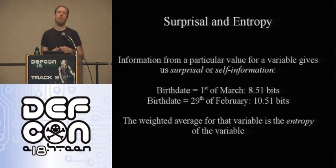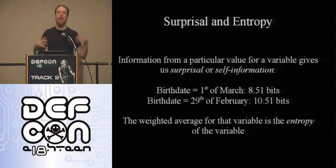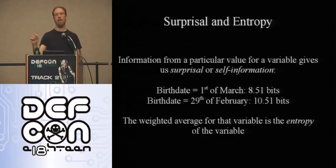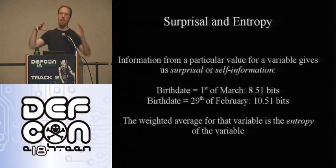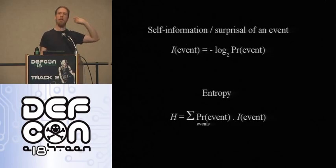We call that first measurement the surprisal, or self-information, of a fact you've learned. The surprisal that I was born on the 29th of February is 10.51 bits. We can also talk about the entropy of this type of measurement, which is the expectation value of the surprisal — measuring across the whole probability distribution. We have a paper on our website with all the mathematics in more detail if you're interested.